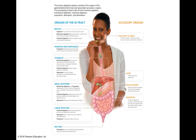The accessory organs provide enzymes and fluids but don't come in contact with food itself. The salivary glands produce amylase, mucus, lipase, and other chemicals. The liver produces bile, which is stored in the gallbladder and released into the small intestines when food enters. We also have the pancreas, which produces digestive enzymes and bicarbonate ions.